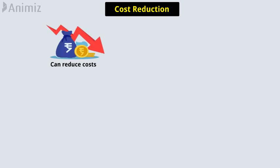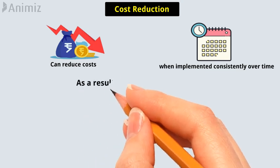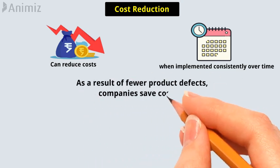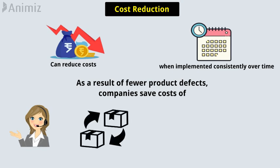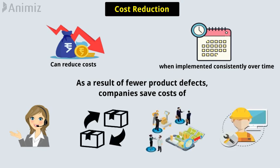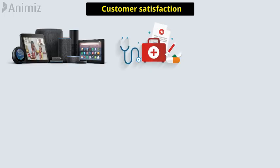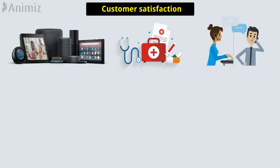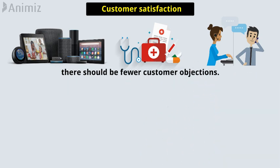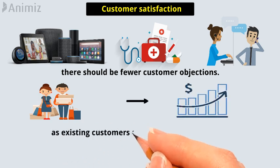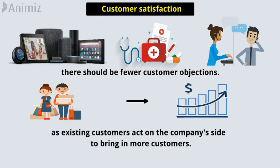Cost Reduction — total quality management can reduce costs throughout an organization when implemented consistently over time. As a result of fewer product defects, companies save costs on customer support, product replacements, field service, and the creation of product fixes. Customer Satisfaction — since the company has better products and services and its interactions with customers are nearly error-free, there should be fewer customer objections. A higher level of customer satisfaction may also lead to raised market share as existing customers help bring in more customers.